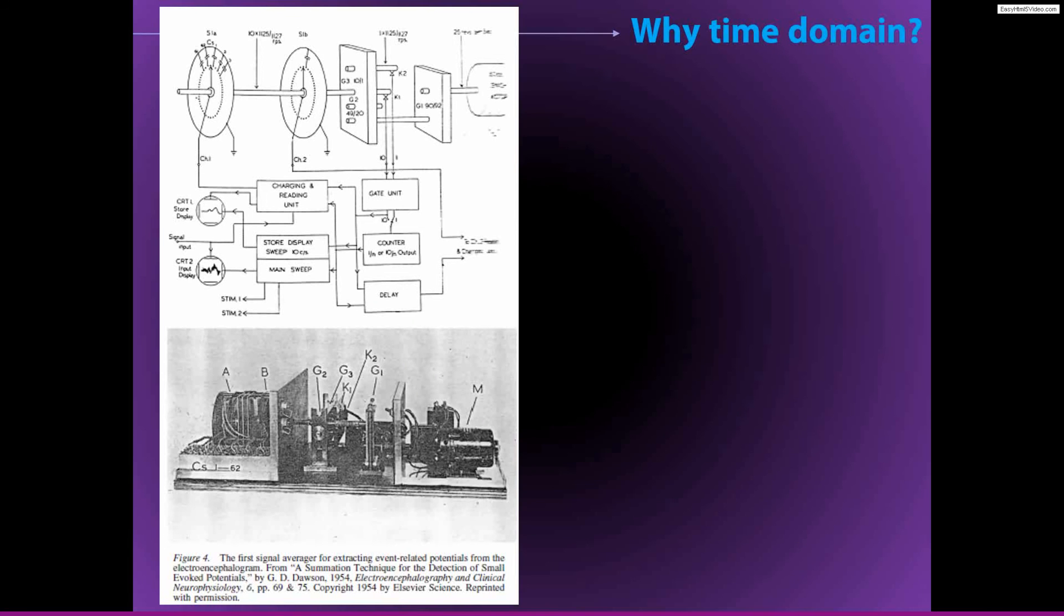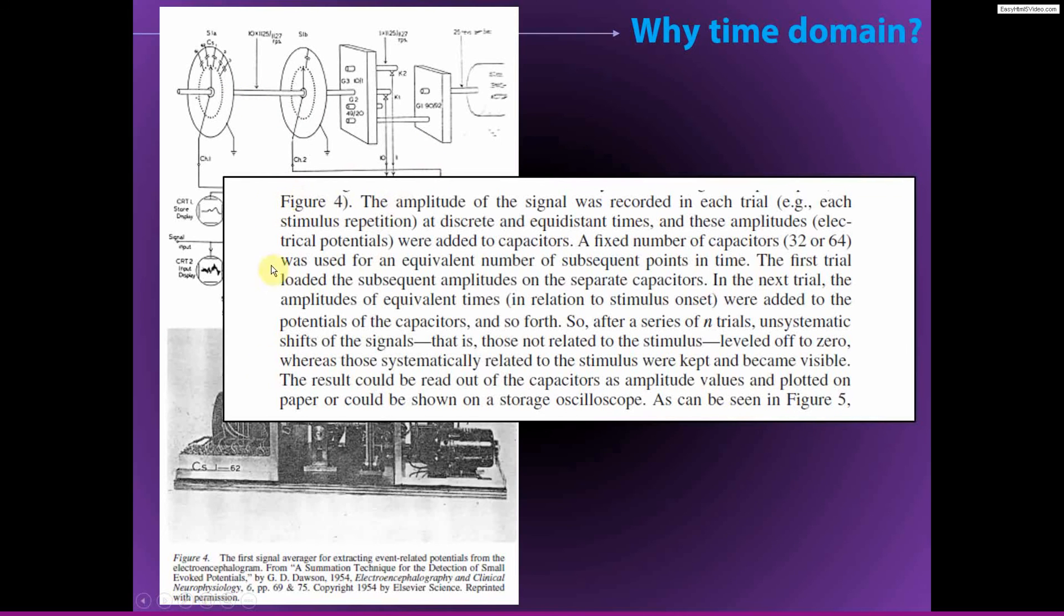And so here, this is an interesting little tidbit of history of electrophysiology and cognitive electrophysiology. This machine here, this device, is the first signal averager for extracting event related potentials from the EEG. It was published in 1954, so this machine was probably developed and built in the late 40s and early 50s. And here you see a wiring diagram for part of this machine.